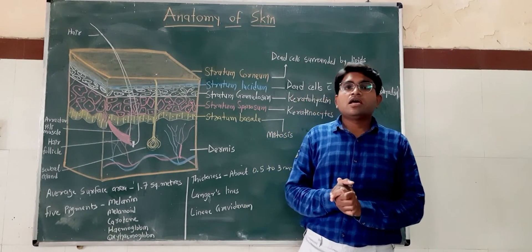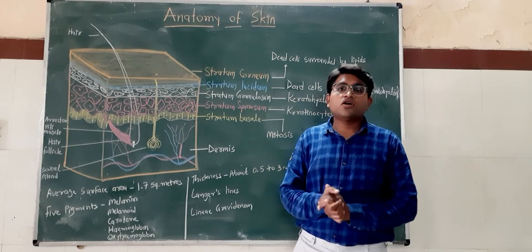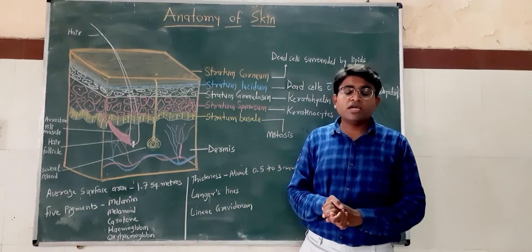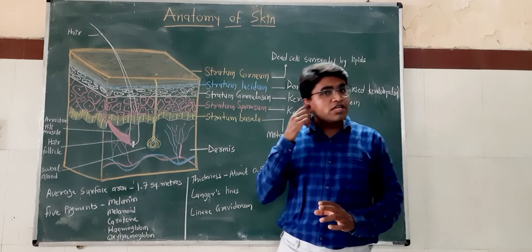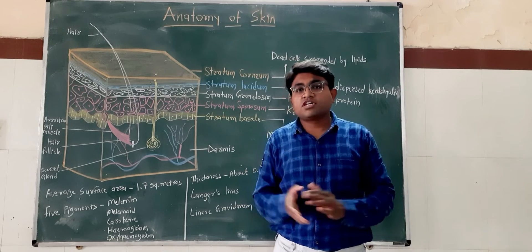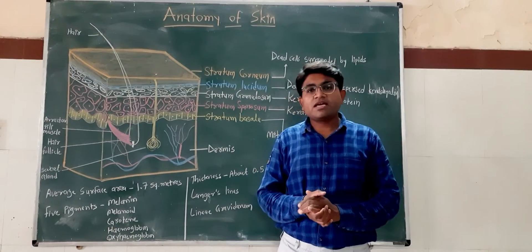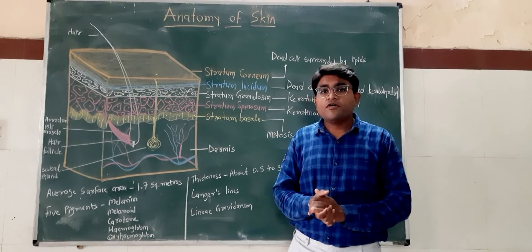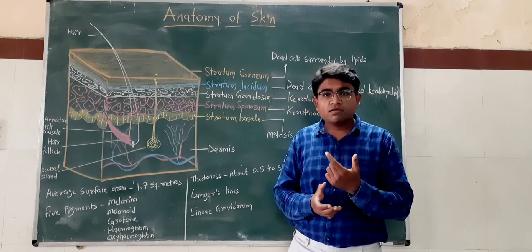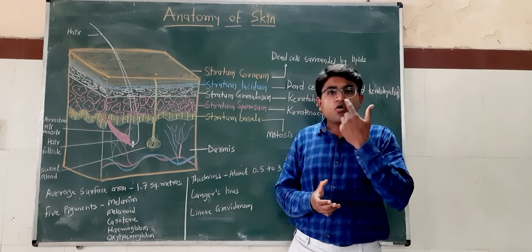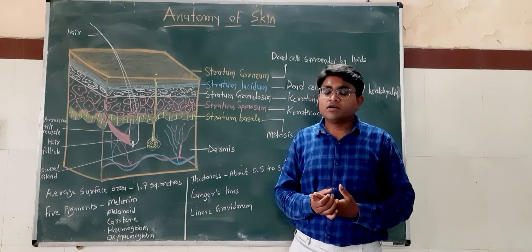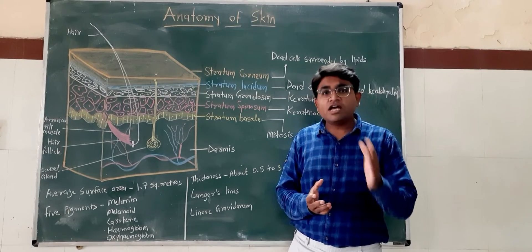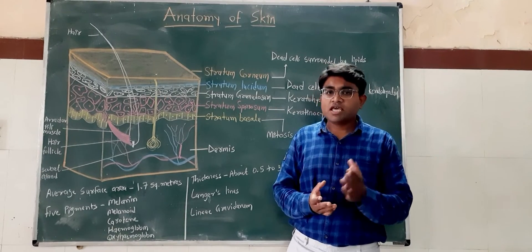The skin is the general covering of the entire external surface of the body, including the external auditory meatus and the outer surface of the tympanic membrane. It is continuous with the mucous membrane at all openings of the body, such as in the mouth and the anal opening, which continues with the mucous membrane of that area.